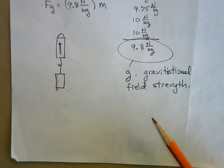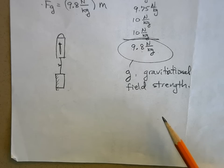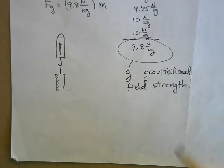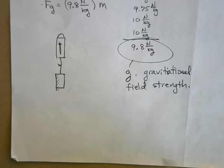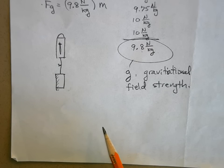On the moon, the gravitational field is much weaker — about 1.6 newtons of force per kilogram of mass. On Jupiter and other planets, there are different strengths of gravitational field. In Earth orbit, the strength of Earth's gravity is about 8.9 newtons per kilogram — it's quite strong out there; it's just that you're in freefall.